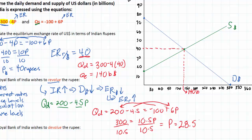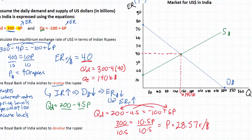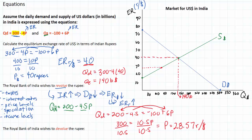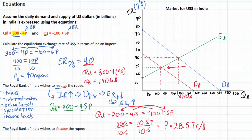I can show 28.57 rupees per dollar as the new equilibrium exchange rate on the graph, resulting from the fall in demand for dollars. The new Q intercept is 200. Indians are now more responsive to price changes in the dollar, so the slope decreases and the demand curve becomes flatter. Connecting the Q intercept of 200 with the new equilibrium of 28.57 gives the new demand curve for dollars. The increase in Indian interest rates caused a decrease in demand for dollars as investors chose to keep money in the Indian economy rather than investing in US assets.